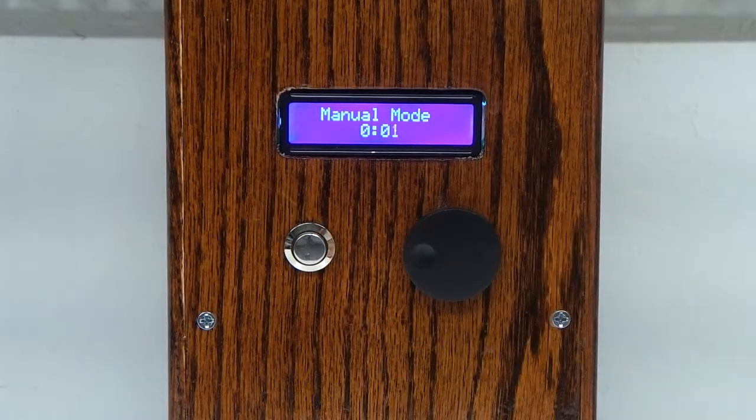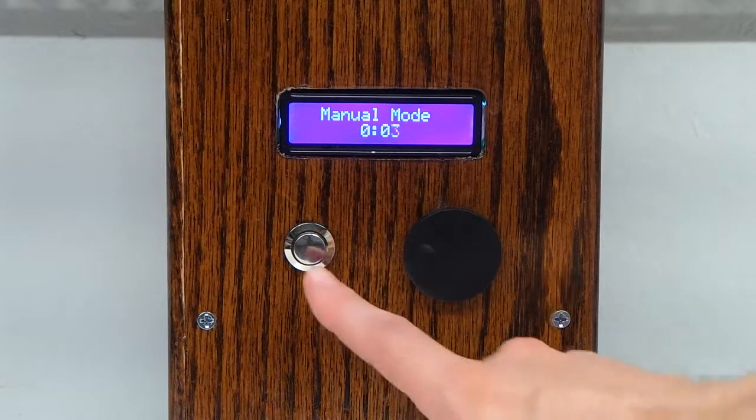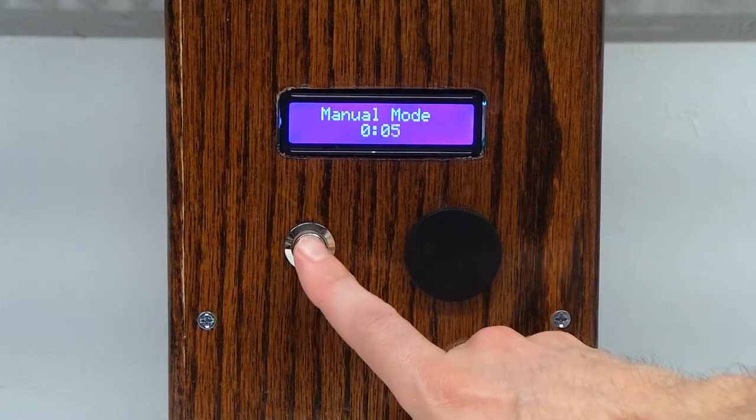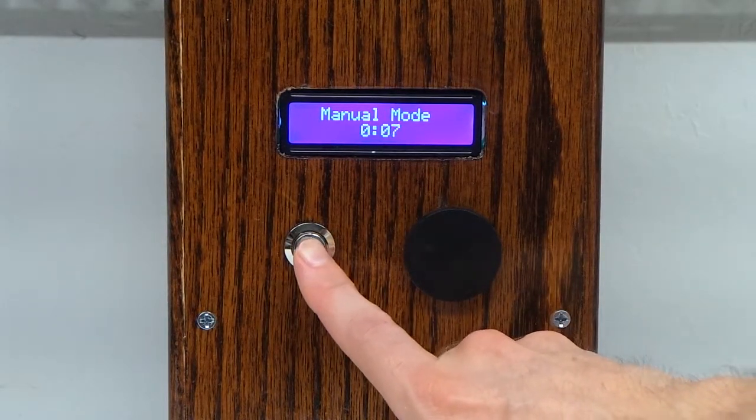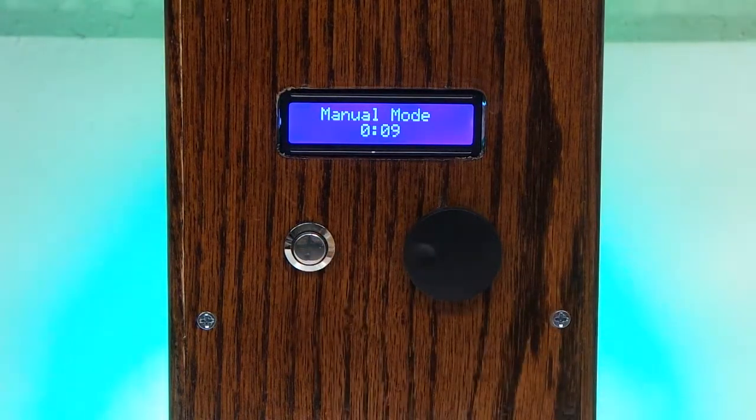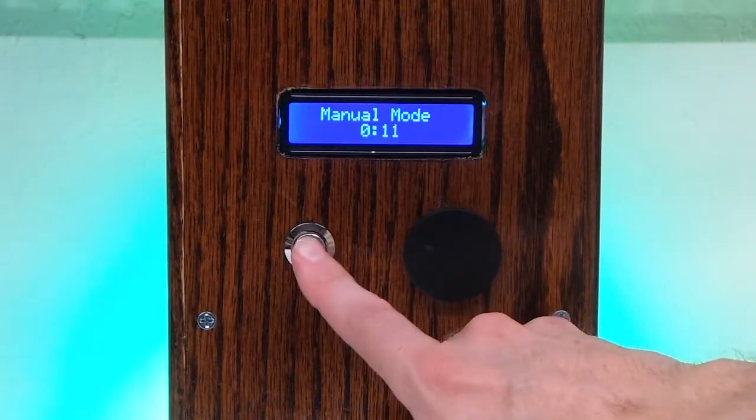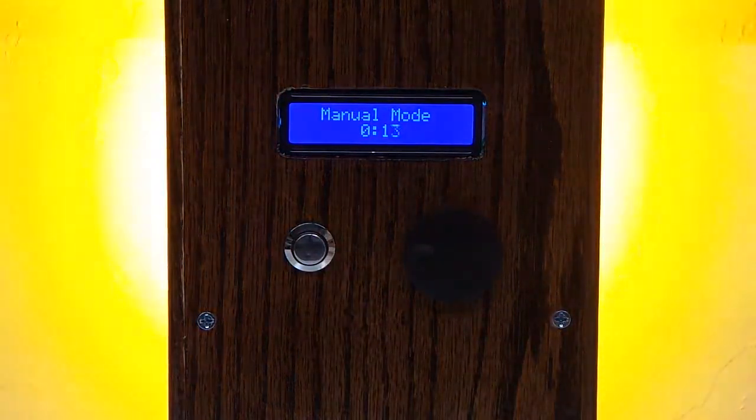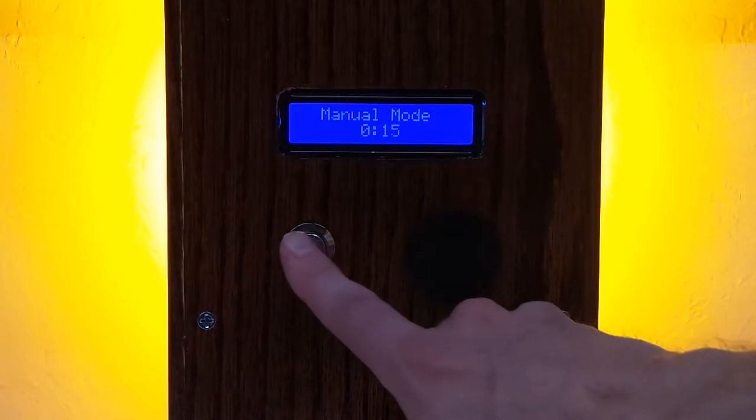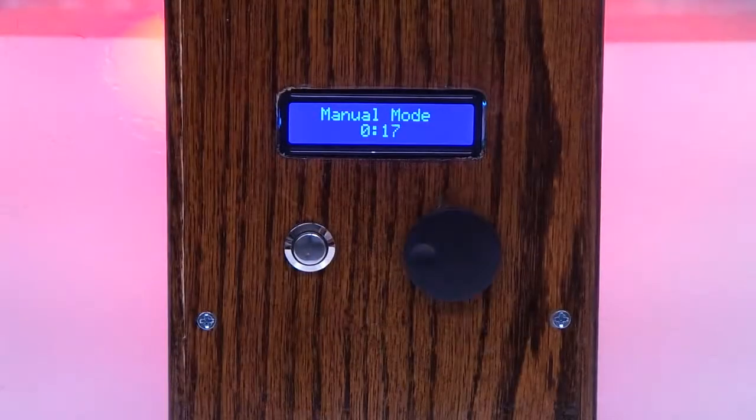We can start the timer in manual mode, and then we press the manual light adjust button to change the light. We press this button once to show the green light. We press it a second time to go to the yellow light. And press it again to go to the red light.